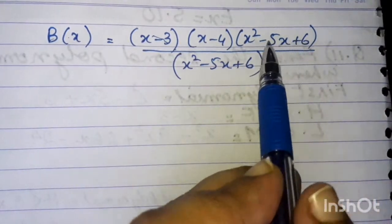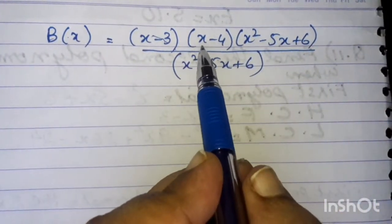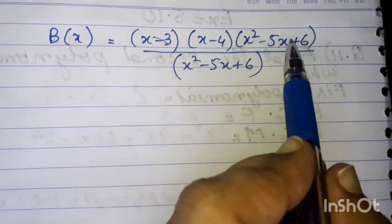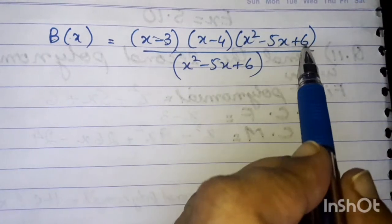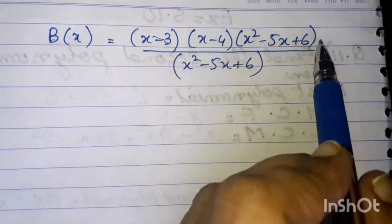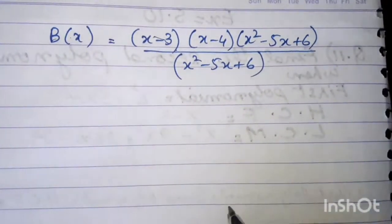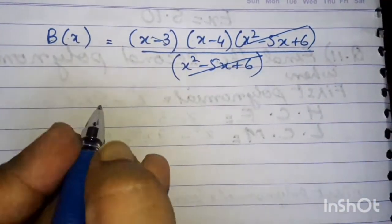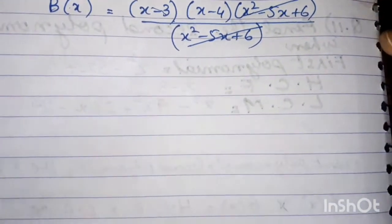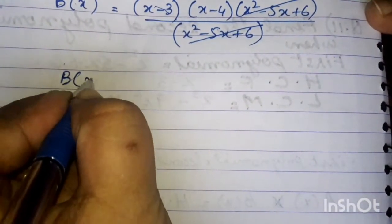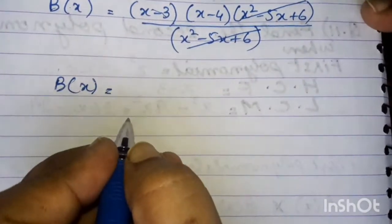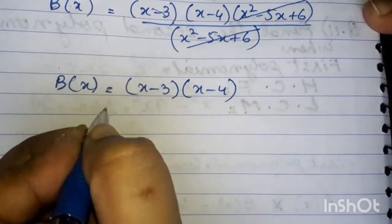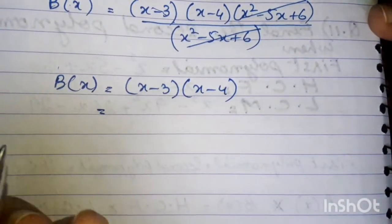One factor is x squared. The LCM expression has two factors: the quotient x minus 4 and the divisor x squared minus 5x plus 6. In the numerator and denominator, the two factors completely cancel. This means the value of B — the second polynomial — is equal to x minus 3 multiplied by x minus 4.